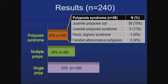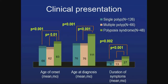A total of 240 patients were included. 52% had single polyp, 28% had multiple polyps, and 20% had polyposis syndrome. Among the polyposis syndrome group, 80% were juvenile polyposis coli, 11% were juvenile polyposis syndrome, 6% were Peutz-Jeghers syndrome, and 4% were familial adenomatous polyposis.